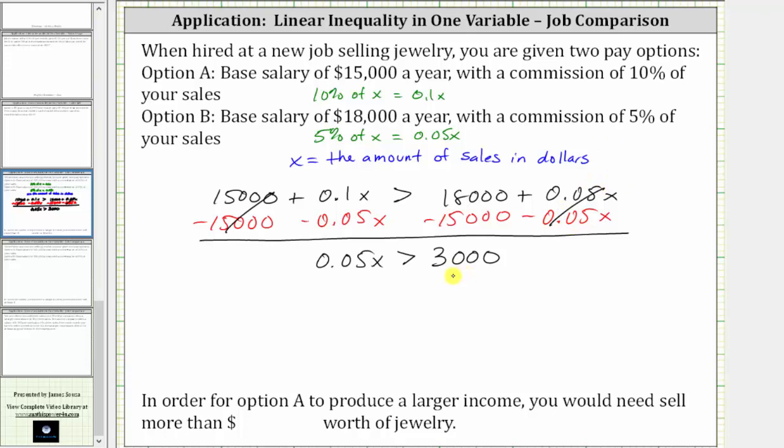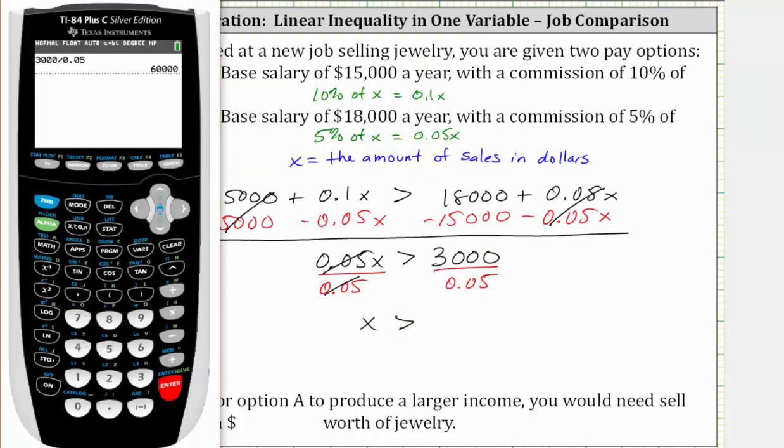The last step is to multiply or divide to solve for x. 0.05x means 0.05 times x, which means for the last step, we divide both sides by 0.05. Simplifying, 0.05 divided by itself simplifies to one. One times x is x. X is greater than 3,000 divided by 0.05, which is equal to 60,000.